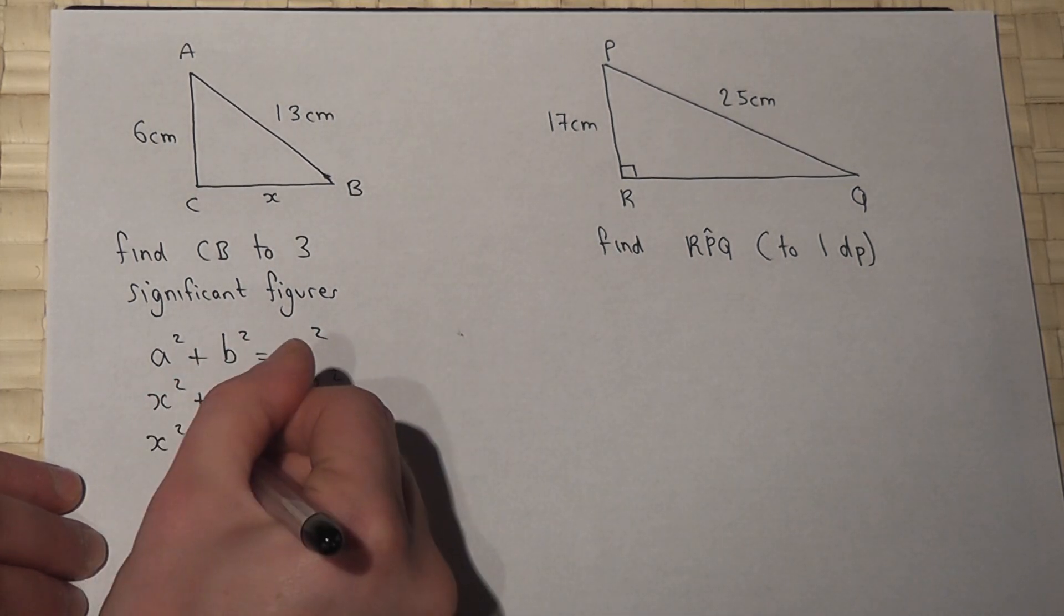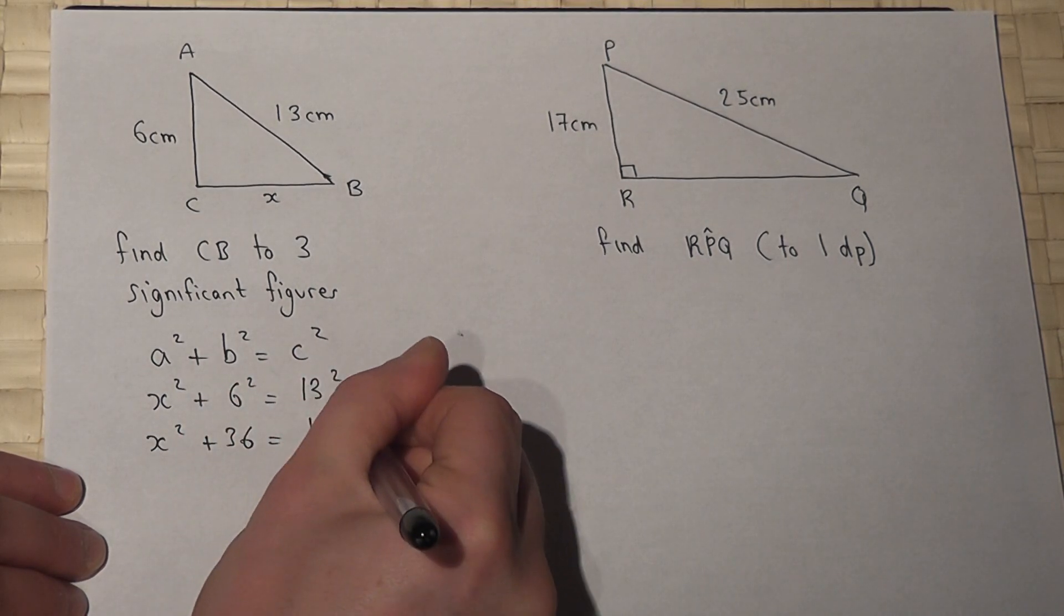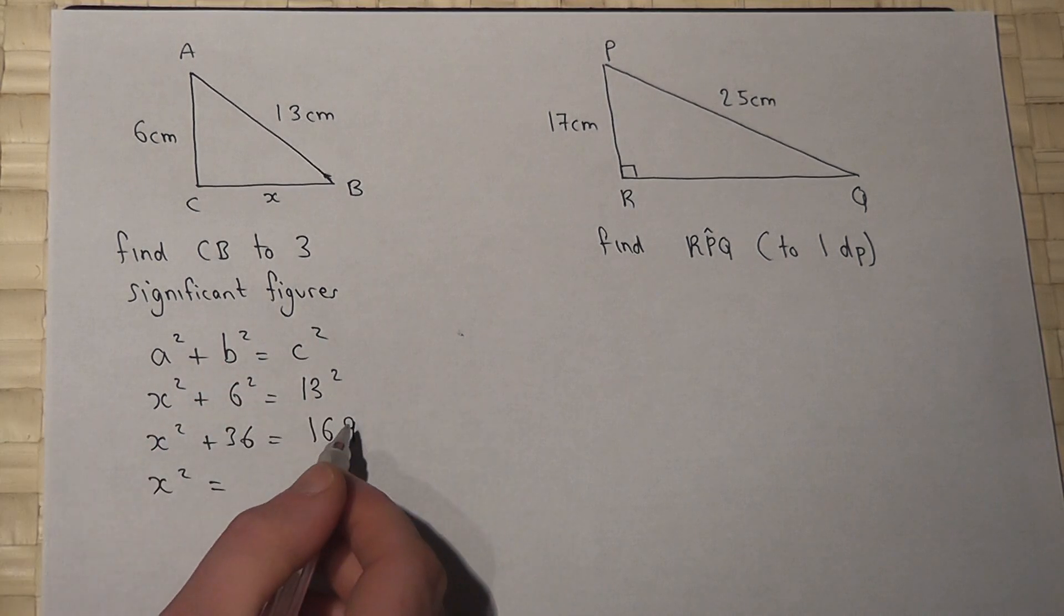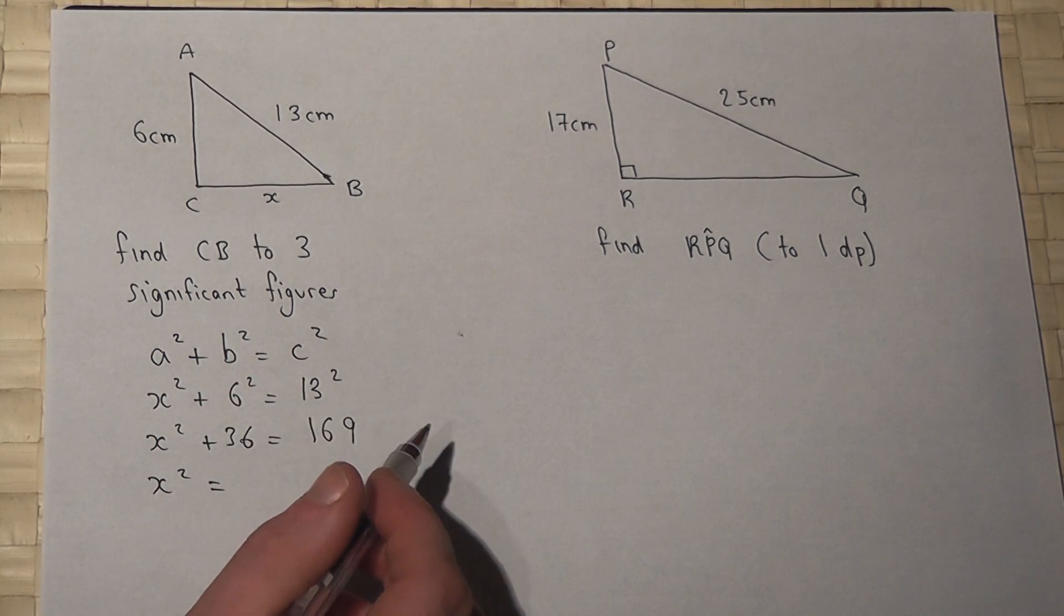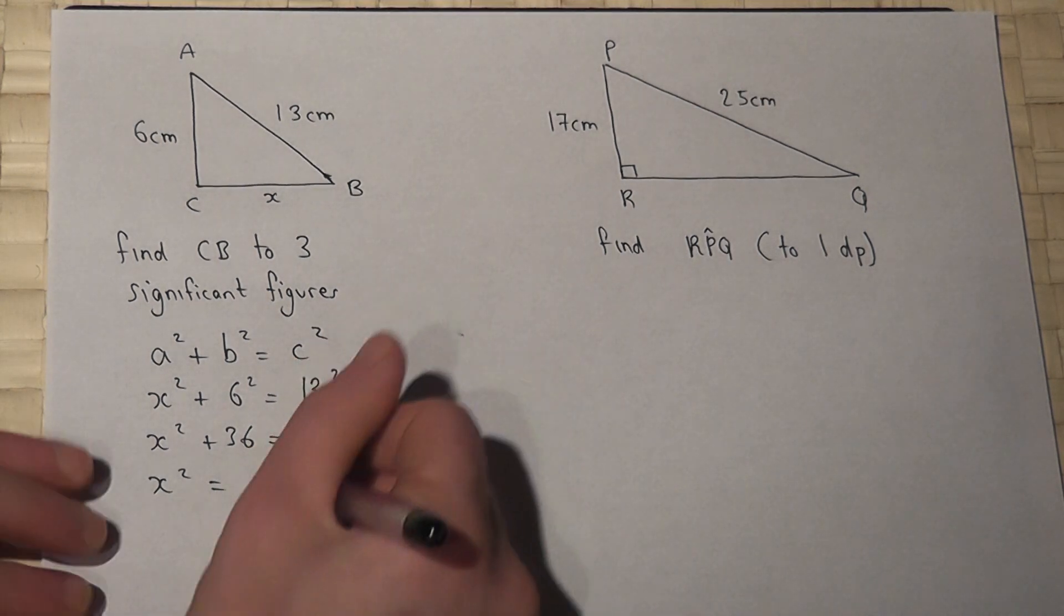So let's work out 6 squared and 13 squared. So x squared will just equal 169 take away 36, which is 133.